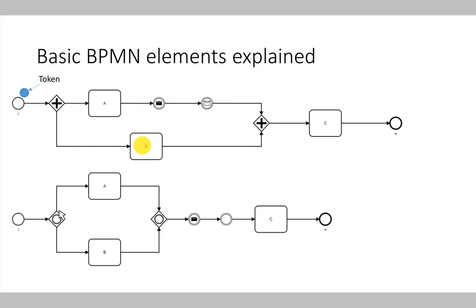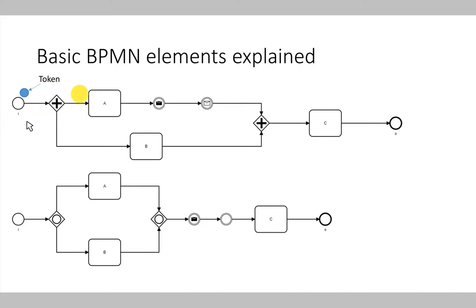The process describes an abstract representation of a process. Using tokens — just a mark with a color or a number — we represent a different process instance. In the upper part of the slide we see a token representing one instance of the process. Using this token we can see how our process is executed: it starts at the start event, and once we arrive at the split gateway, the token is split into two tokens — the first moving along the upper part, the second along the lower process path.